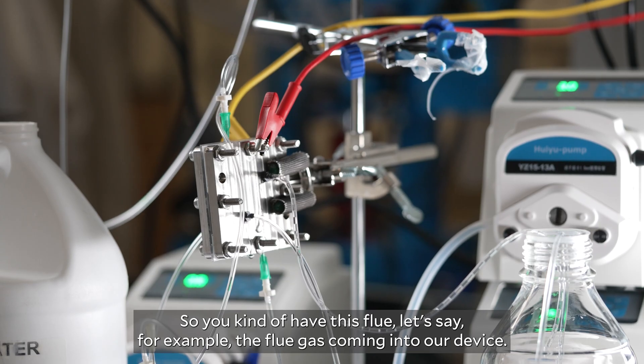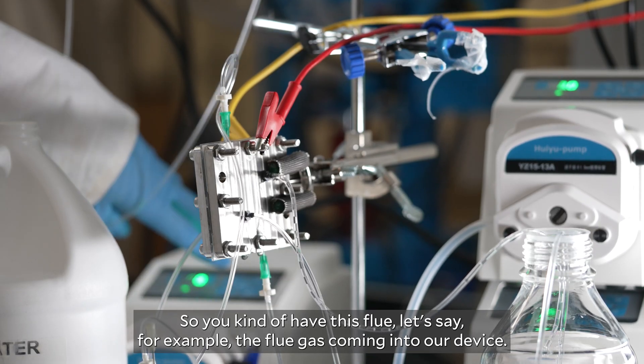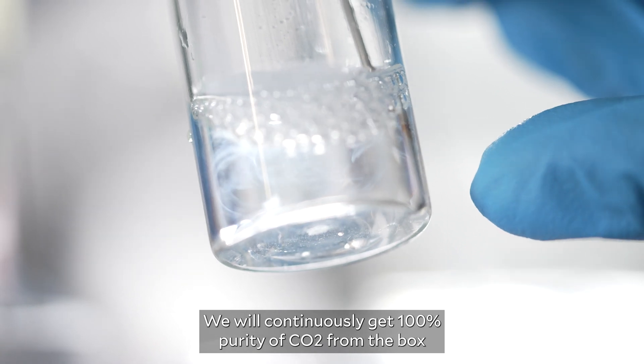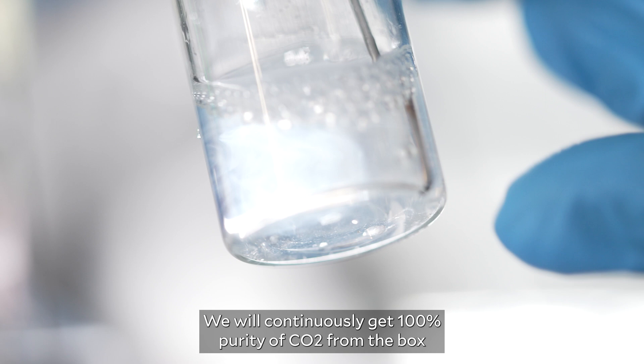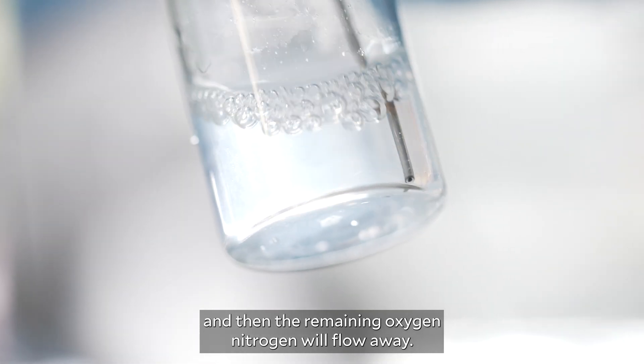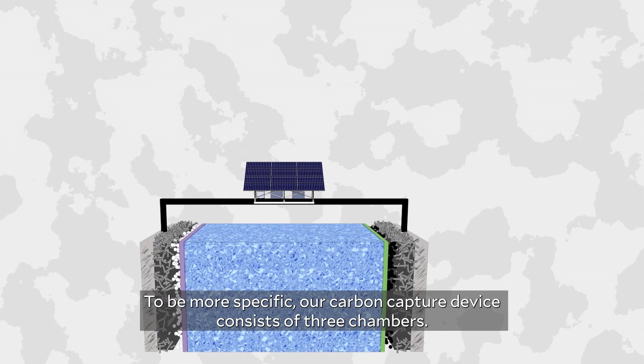So you kind of have this fluid, let's say for example the flue gas coming into our device. We will continuously get 100% purity of CO2 from the box, and then the remaining oxygen and nitrogen will flow away.